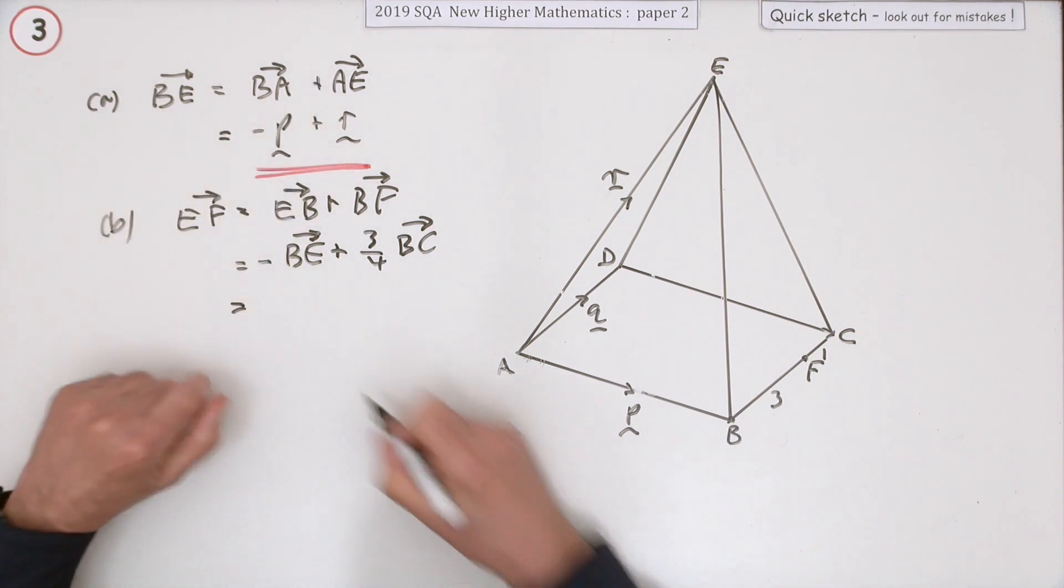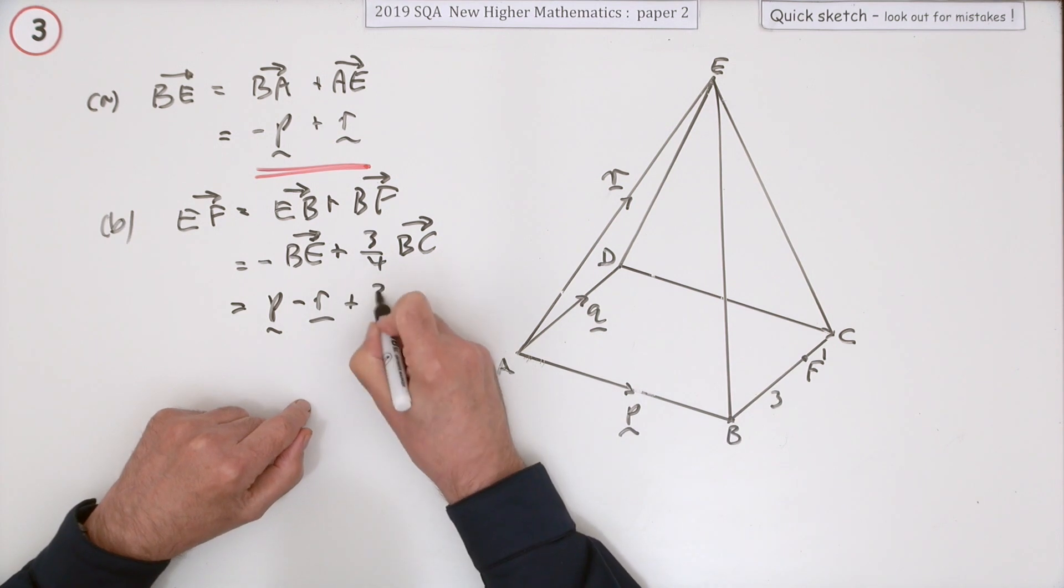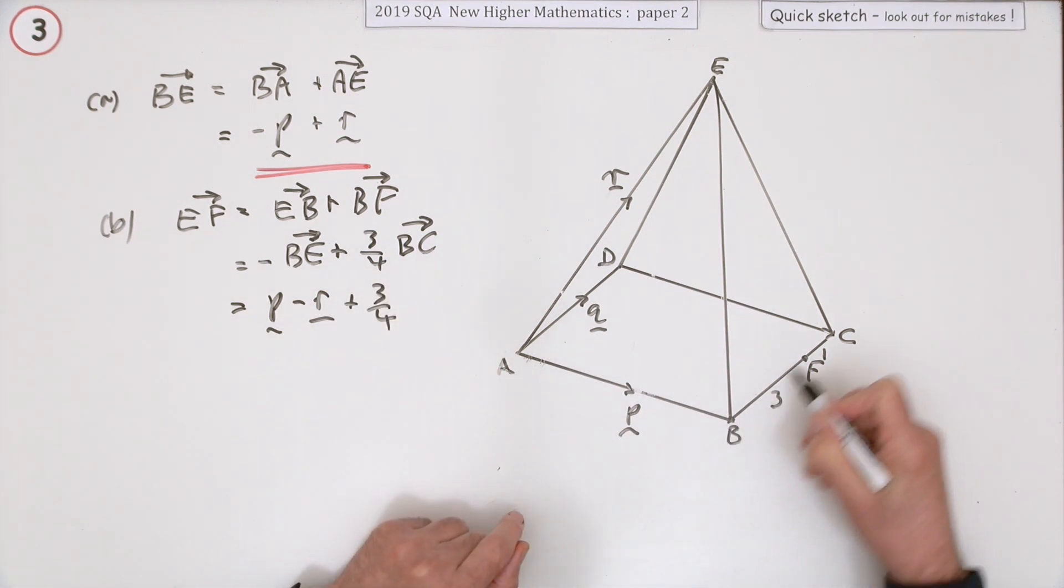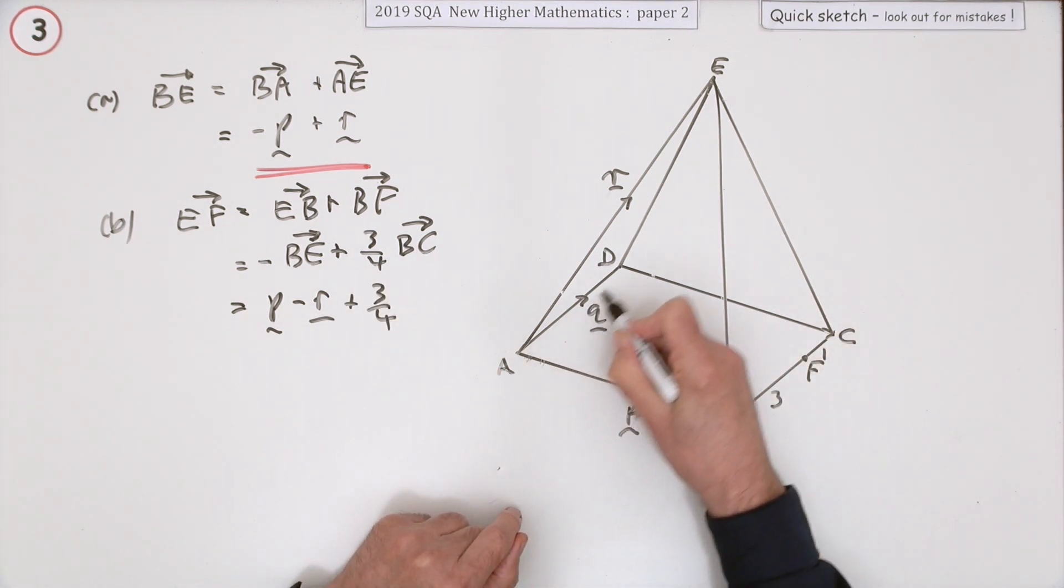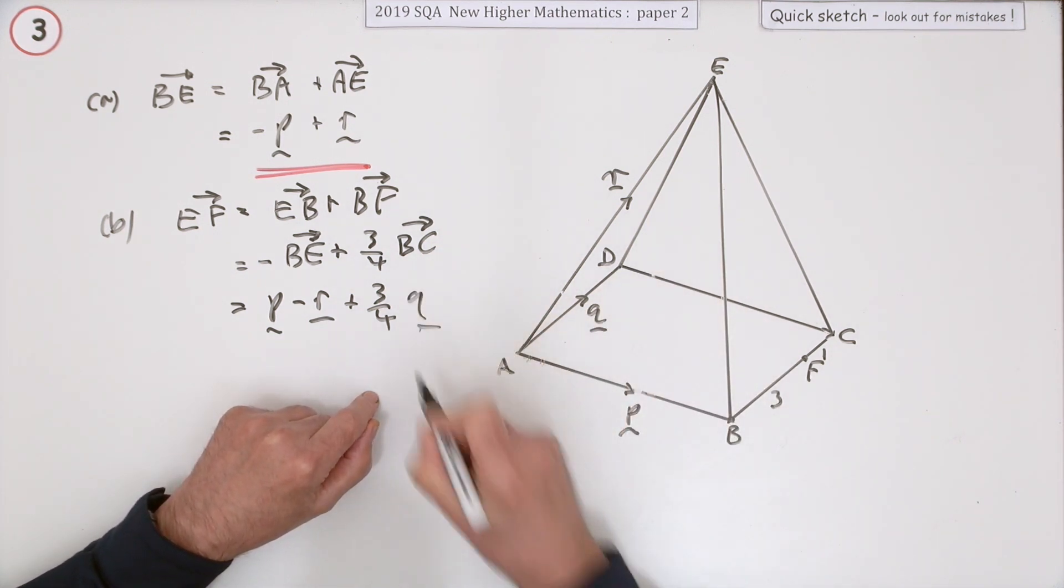Well, that means you're almost there then, because the negative of that will just be flip those signs. And three quarters of BC will be three quarters of whatever BC is parallel to and equal in length to, which is AD, which is Q.